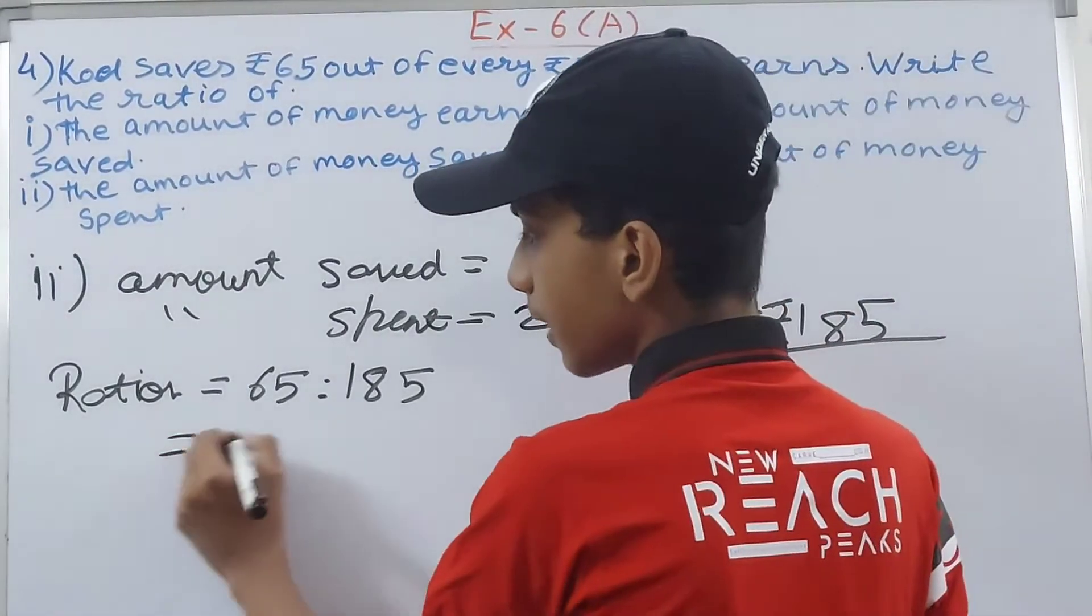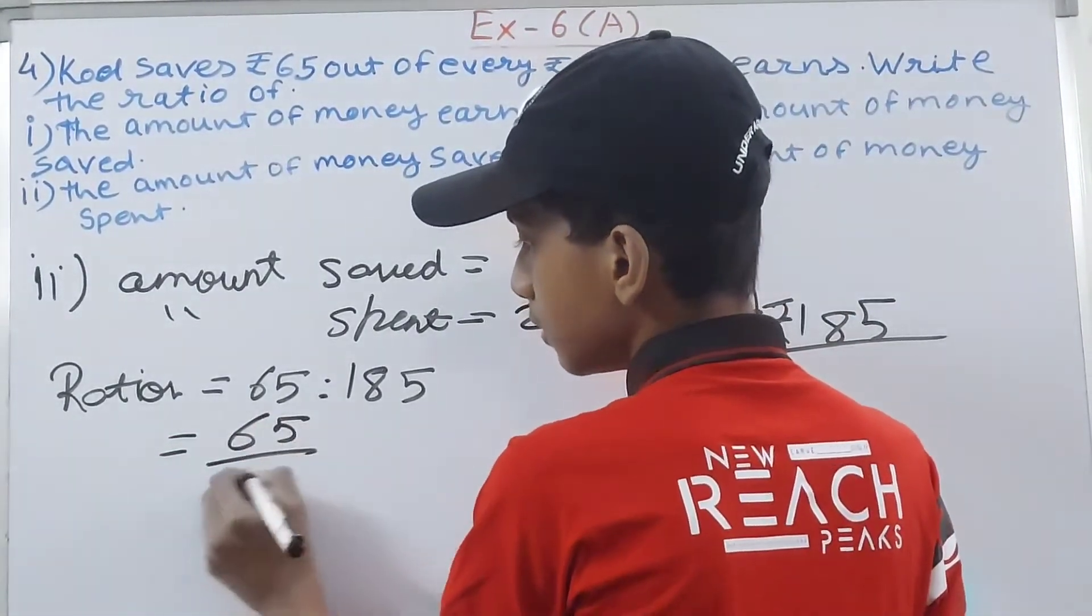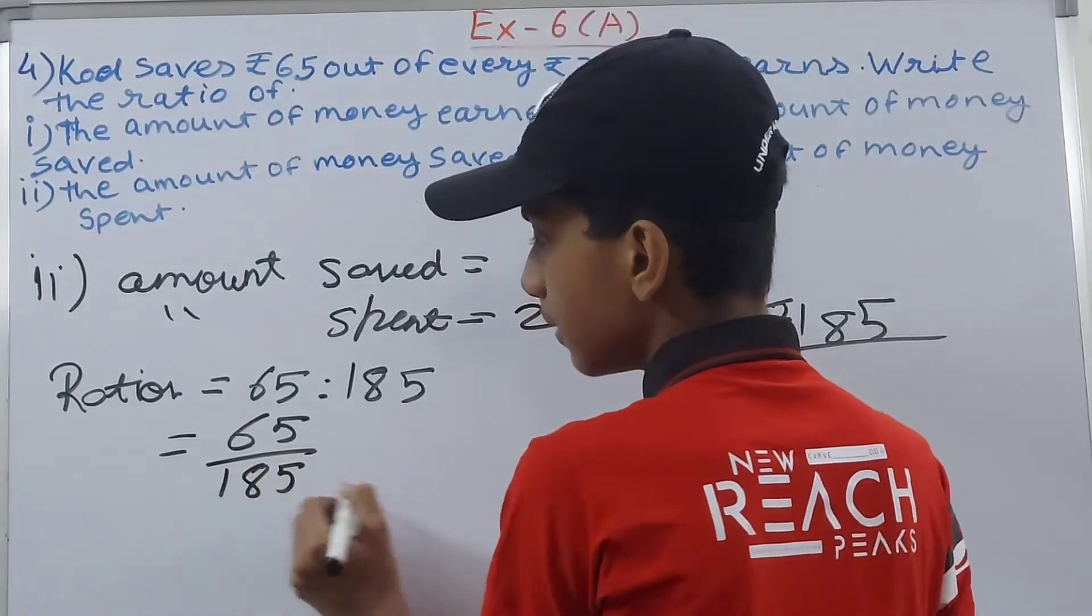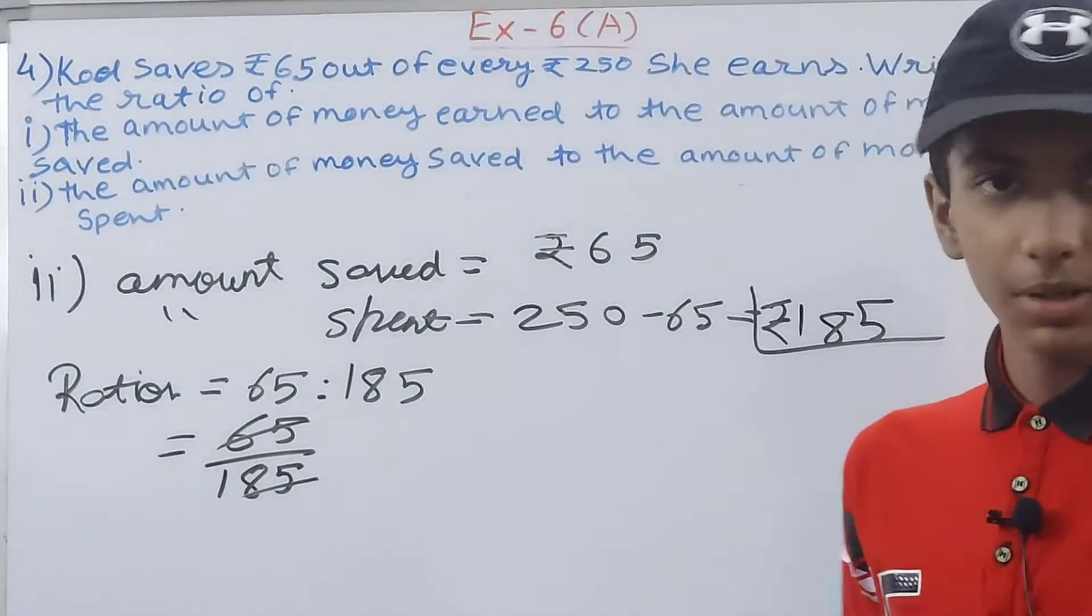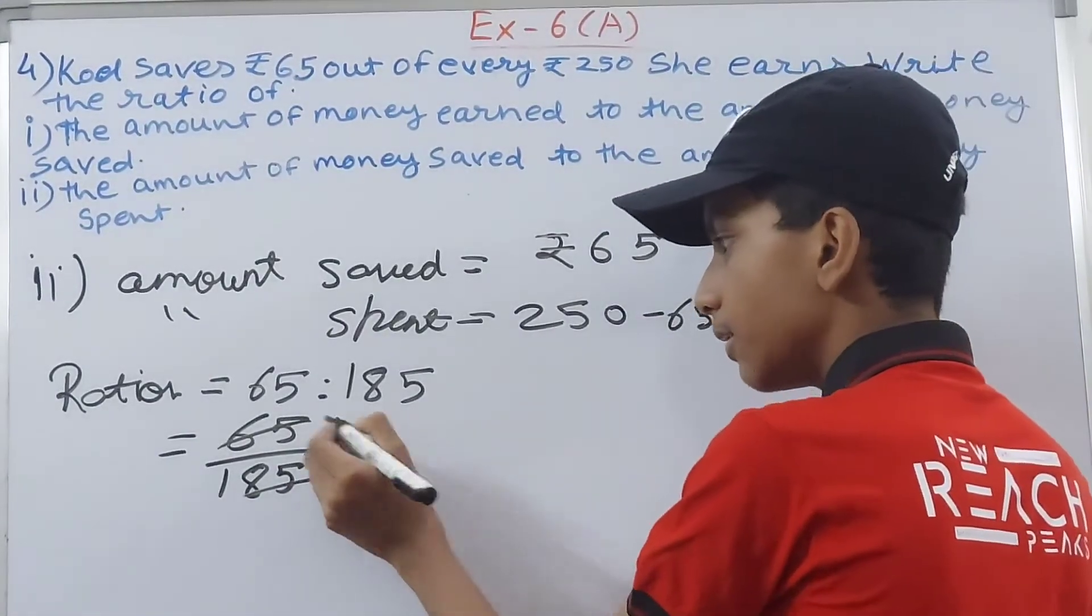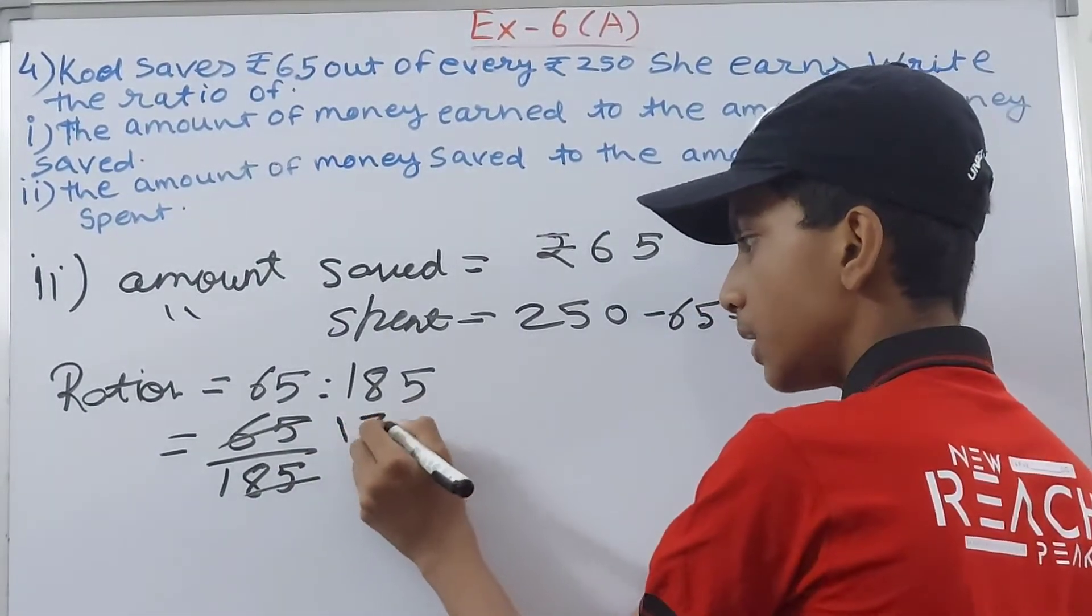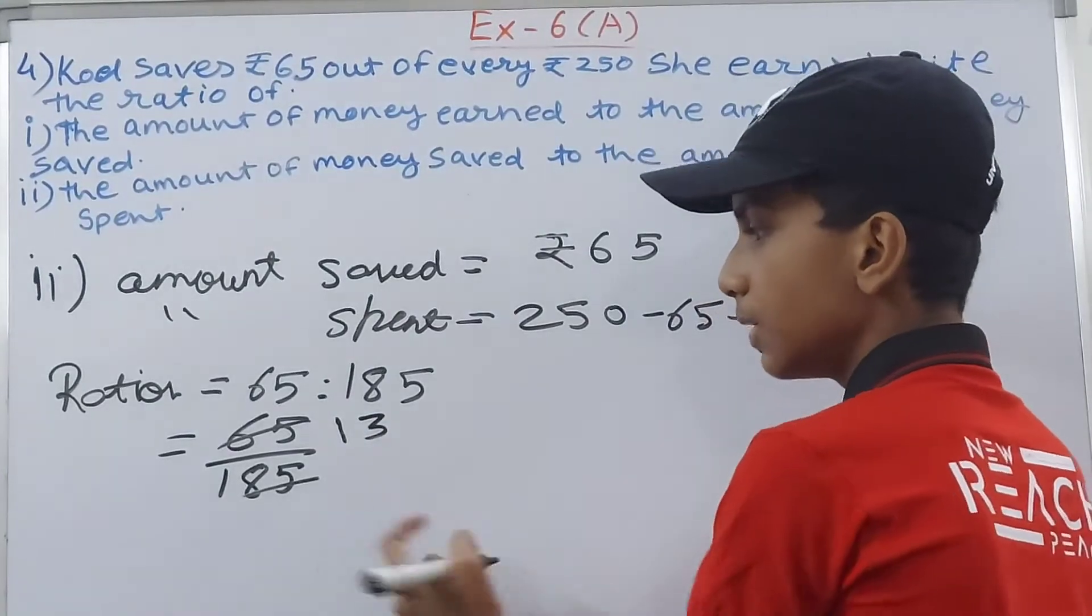Cancel this by 5. This will go how many times? 13. And this one how many times? 37. So 35 goes 7 times into this.